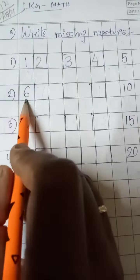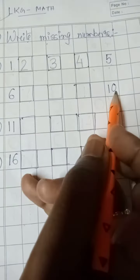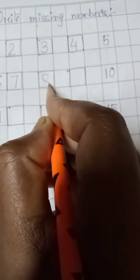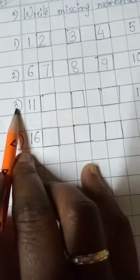You have to do like this. Next one is six, seven, eight, nine, ten. So after six, it's seven, then eight, then nine, then ten. Like this.